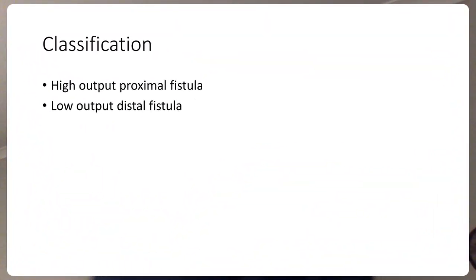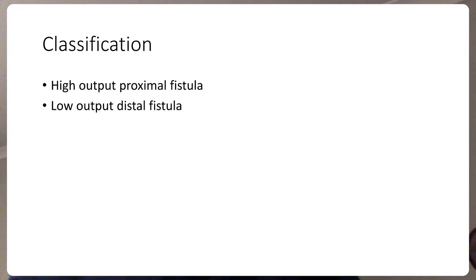Once we have diagnosed the fistula, we need to manage it. Management relies on how much output is coming out of the fistula, and we divide fistulas into high-output and low-output. High-output fistulas are usually proximal in the jejunum, and low-output fistulas are usually distal toward the terminal ileum. There is an arbitrary cutoff: if output is 500 ml or more per 24 hours, it is a high-output fistula; if it is less than that, it is a low-output fistula.